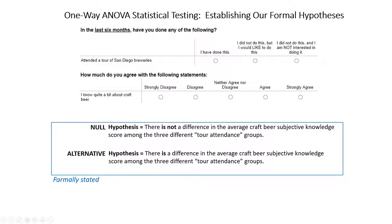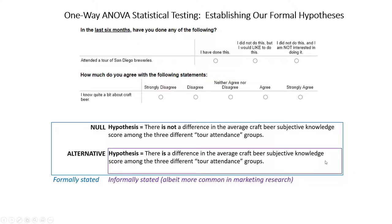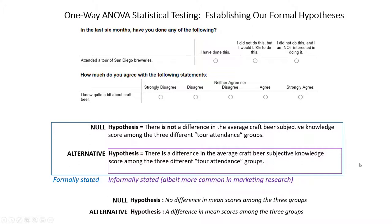In marketing practice we often just state the alternative hypothesis and call it our hypothesis, with the reader understanding it's the alternative. More bluntly stated: the null hypothesis is there's no difference in mean scores among the three groups, and the alternative is that there is a difference in mean scores among the three groups.